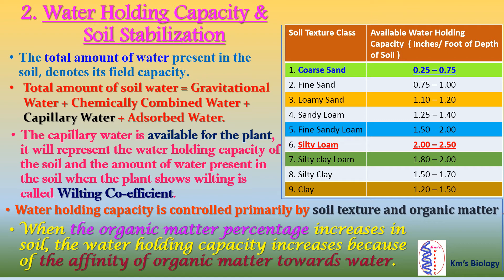Here is a table diagram showing soil texture class and available water holding capacity. In case of silty loam soil, available water holding capacity is maximum — that means 2.00 to 2.50 — and minimum water holding capacity is in coarse sand, that means 0.25 to 0.75.